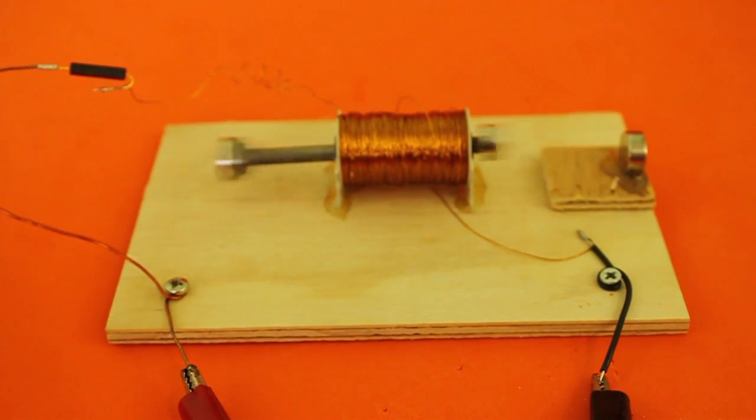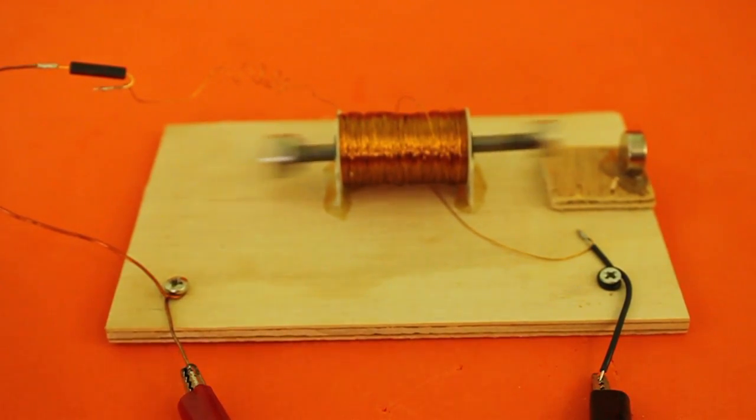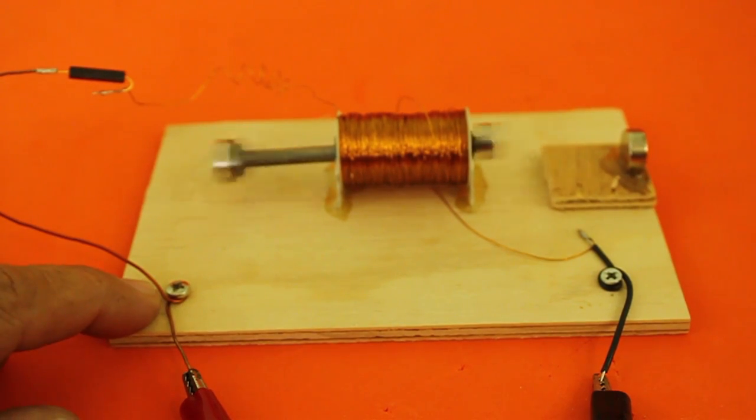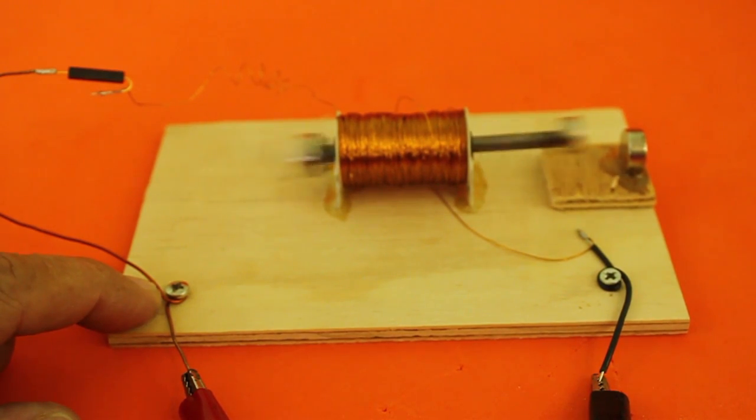The motor is working at five volts, and of course if you increase the voltage it will run at a higher speed. Eight volts. And now this is 12 volts. It is drawing around 120 milliamps.